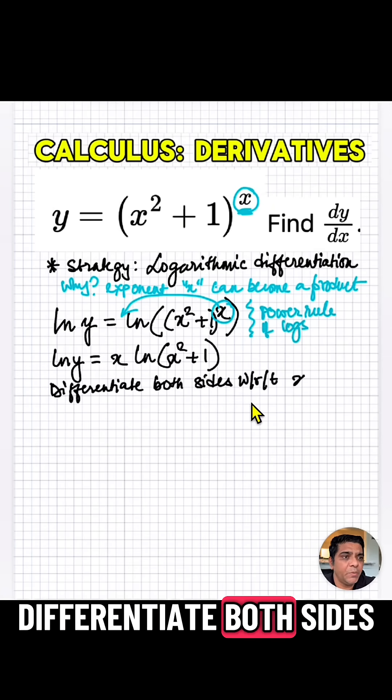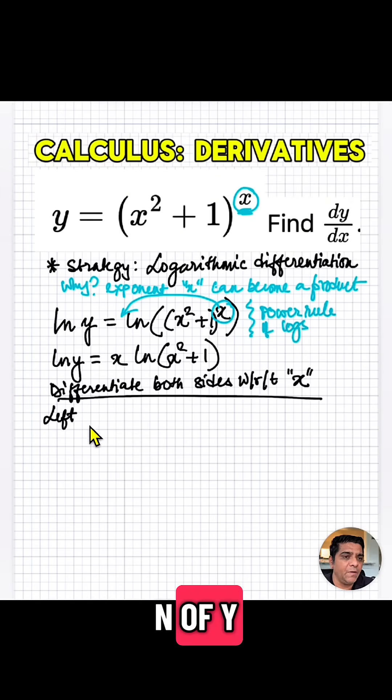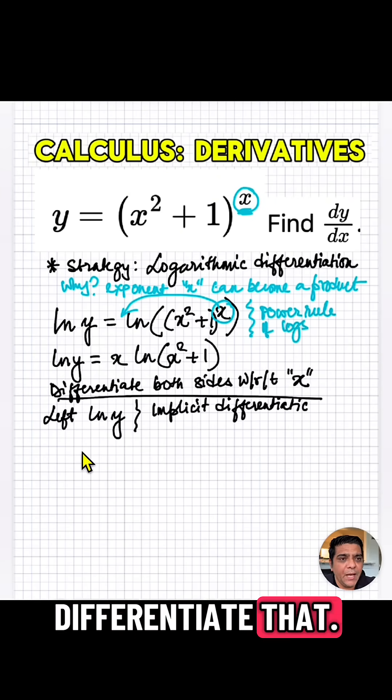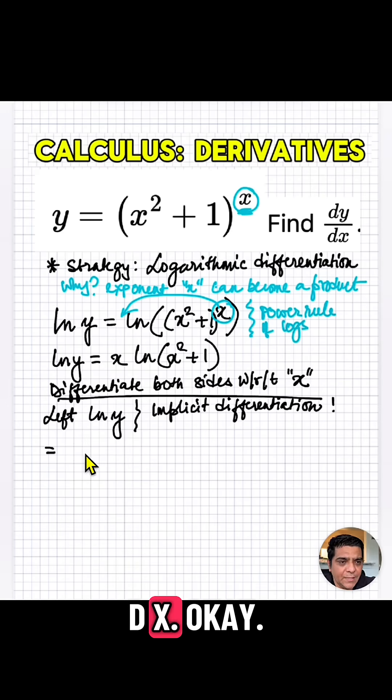Now we're going to differentiate both sides with respect to x. On the left hand side, we have ln of y. So differentiate that. That gives us 1 over y dy dx.